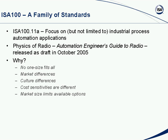ISA 100 is a family of standards, and you'll see this family of standards emerge over time. The .11a standard is focused on — but not limited to — industrial process automation applications. There is no restriction when the standard issues about how it's used, as long as people understand its constraints. The other document already produced was affectionately known as the Physics of Radio; it's now called the Automation Engineer's Guide to Radio, released as a draft in October 2005 and available for download.